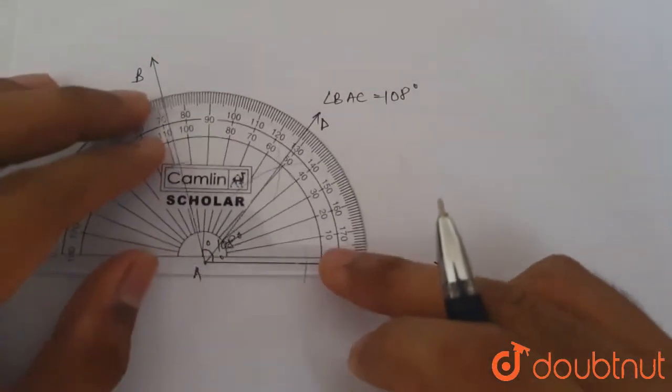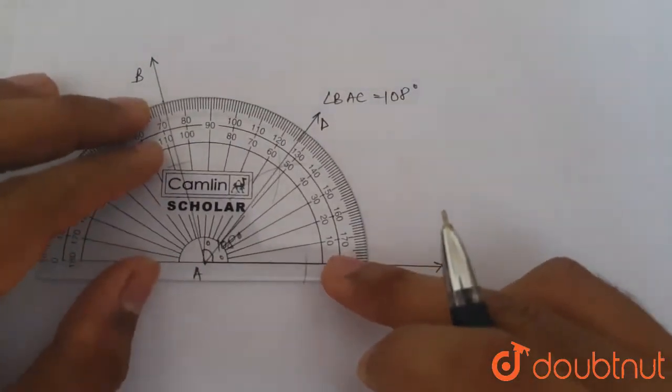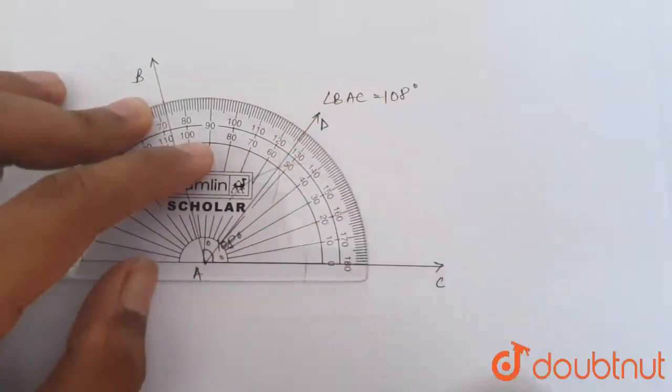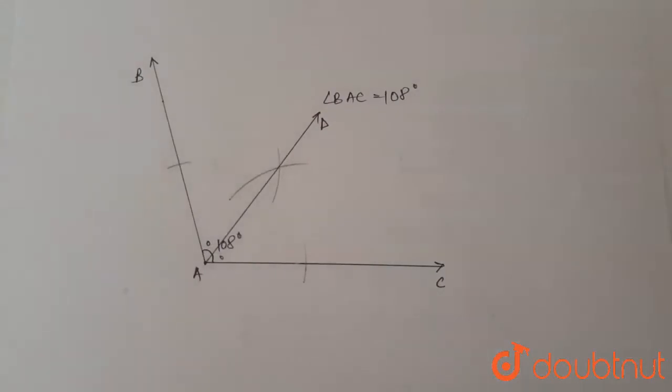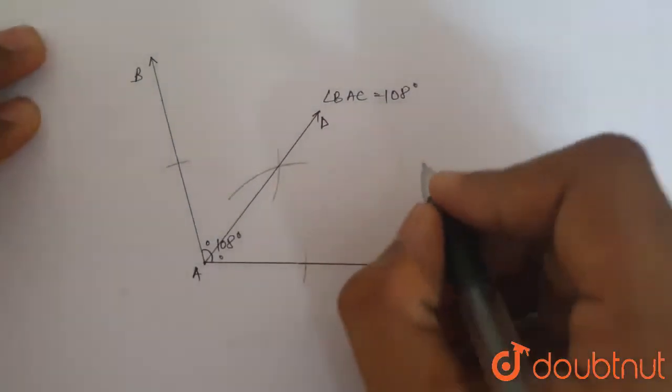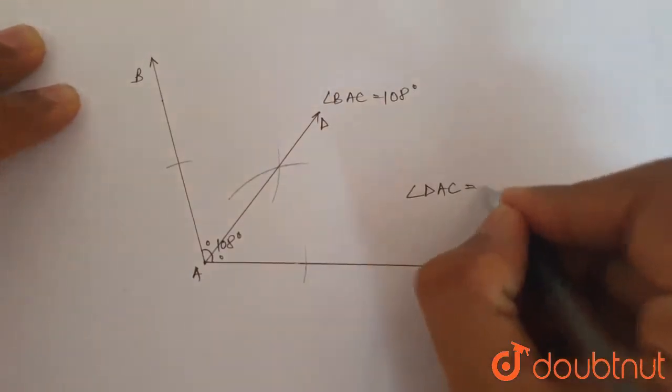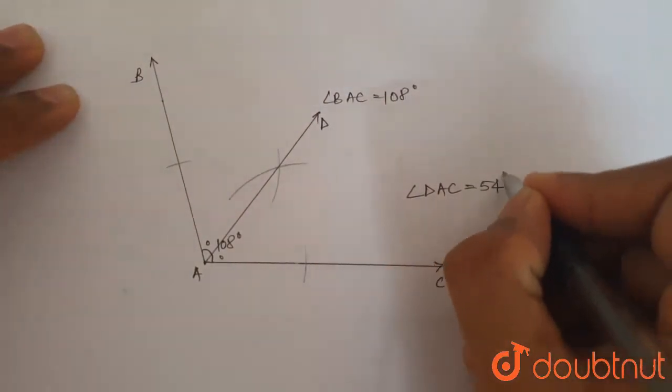Angle DAC is as we measure 54 degrees. Hence, we have successfully made angle DAC equal to 54 degrees.